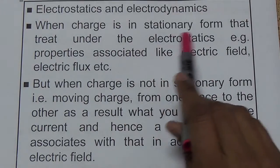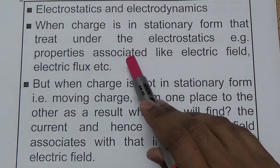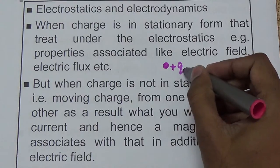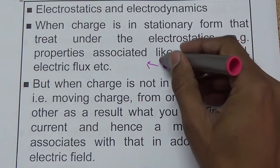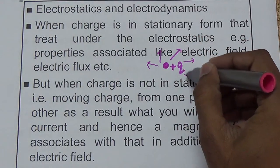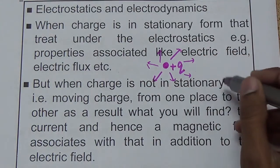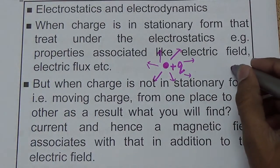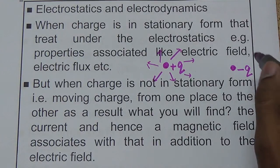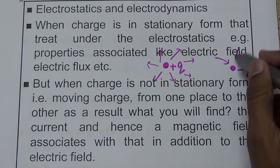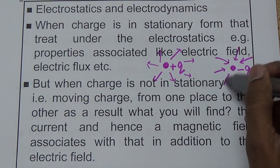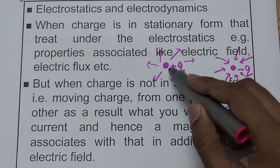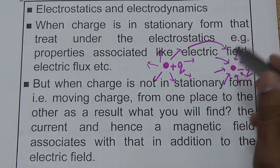When charge is in stationary form, that is treated under Electrostatics. If this charge is stationary — suppose this is a plus Q charge — a field develops around it. That field is represented by vectors. A field develops around this positive charge and electric field lines travel out into the space. These electric field lines end up at the negative charge Q — so the field lines start from the positive charge, which behaves like a source, and travel toward the negative charge.